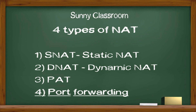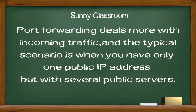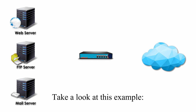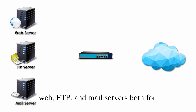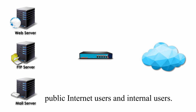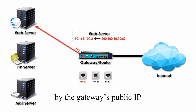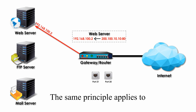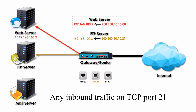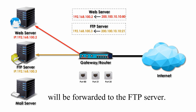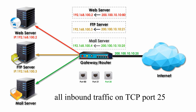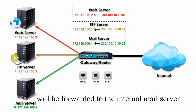Last but not least, port forwarding. Port forwarding deals more with incoming traffic, and the typical scenario is when you have only one public IP address but with several public servers. Take a look at this example. We have three servers: web, FTP, and mail servers, for both public Internet users and internal users. External users can access the web server by the gateway's public IP address on port 80. The same principle applies to the FTP server and mail server. Any inbound traffic on TCP port 21 will be forwarded to the FTP server, and all inbound traffic on TCP port 25 will be forwarded to the internal mail server.